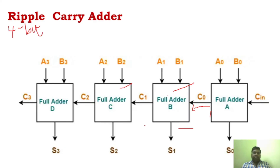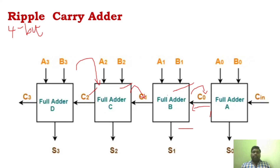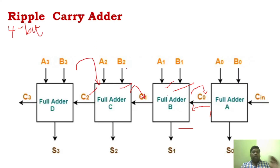Because of this carry propagation, there will be more delay. In a ripple carry adder, you cannot perform parallel operation — each adder depends upon the previous carry output. This full adder will not be able to work until it receives C0; similarly this one will not work until it receives C1, and this one until it receives C2. Everything is interdependent, which is why the delay is very high. The carry propagates from one end to the other.